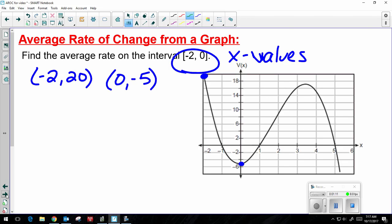So if you need to, you can label these as x1, y1, x2, y2, but you don't have to. So, y2 minus y1 over x2 minus x1.